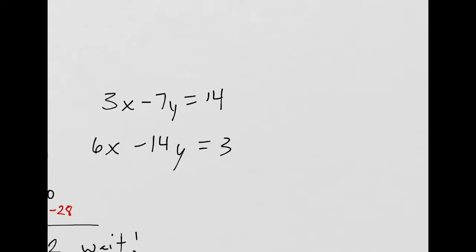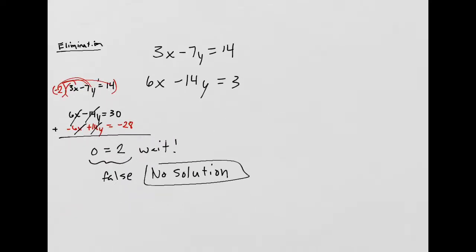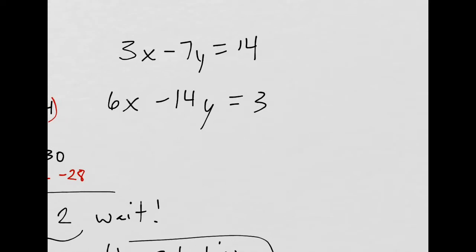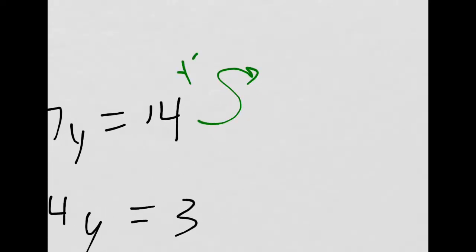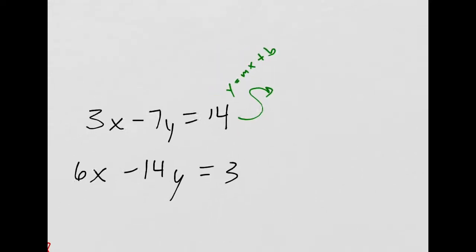3x minus 7y equals 14, and then 6x minus 14y equals 30. Let me change them into, so this is, the answer is no solution. We're done with the problem already, but I want to show you why. I really do. So let's see what happens if I change this into y equals mx plus b form, slope intercept form.